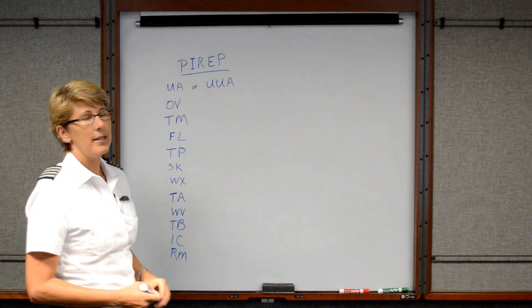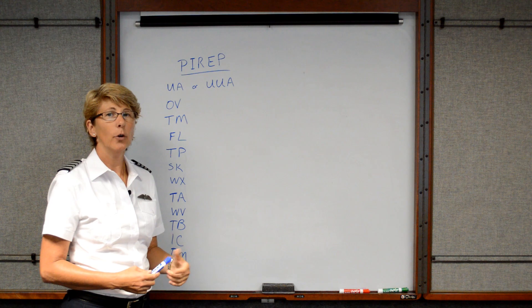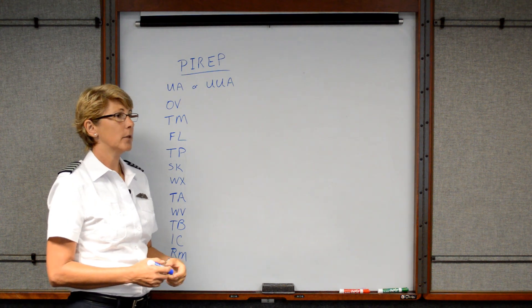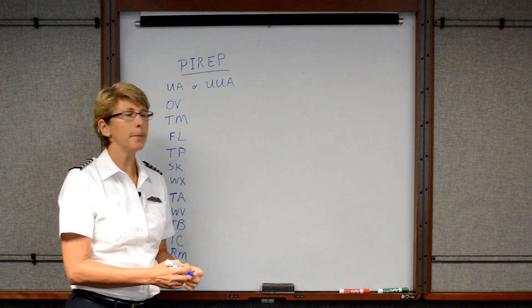UA stands for Routine Pilot Report, and UUA stands for Urgent Pilot Report. Maybe there was some severe turbulence and they wanted to report that so other aircraft don't fly through that area.